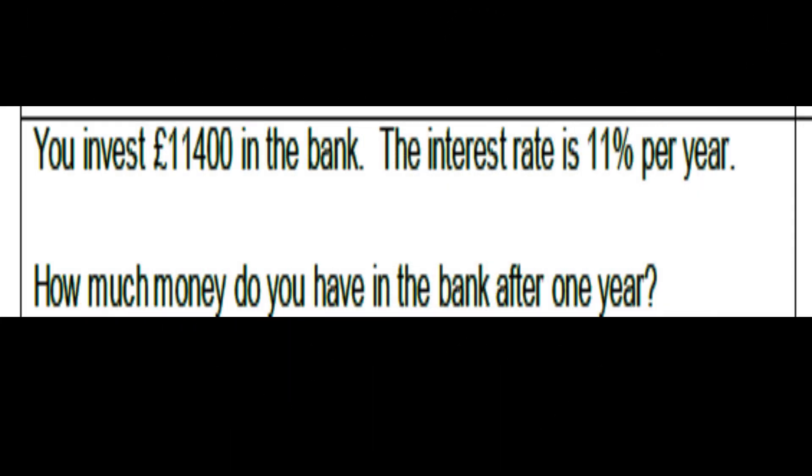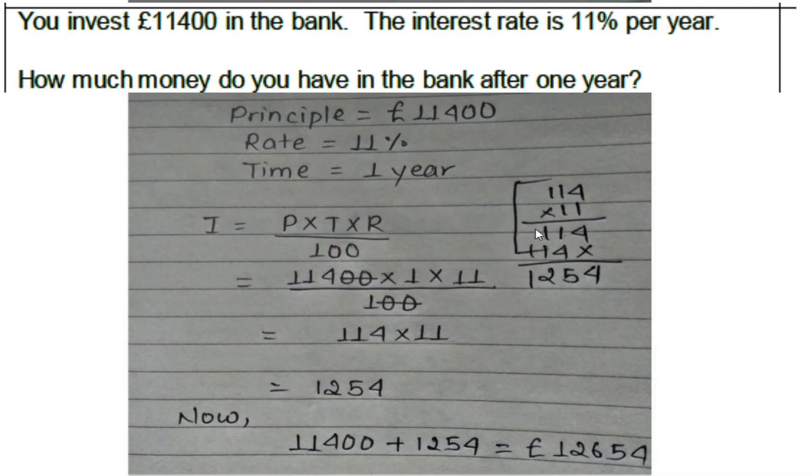Next question: You invest £1140 in the bank. The interest rate is 11% per year. How much money do you have in the bank after one year? The principal is £1140, the rate is 11%, and the time is one year. The formula is I equals P times T times R divided by 100. So £1140 times 1 times 11 divided by 100.